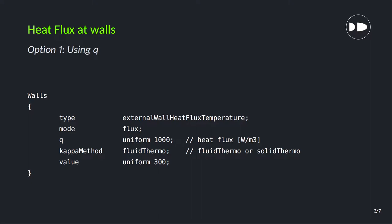The first method is using heat flux itself. As you can see on the screen, we have a standard template using the heat flux boundary condition. Imagine a 3D pipe where you need to give a heat flux boundary at the walls. Using the externalWallHeatFluxTemperature boundary condition type, we set the mode to 'flux'. Then we apply the value of flux — here q is uniform 1000, which is a random value for this case.